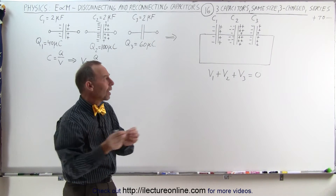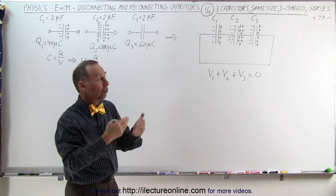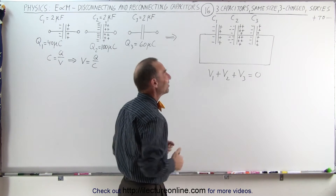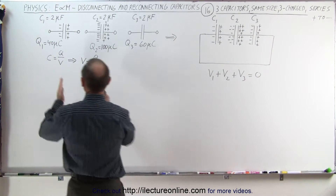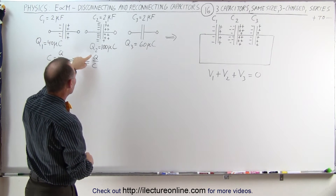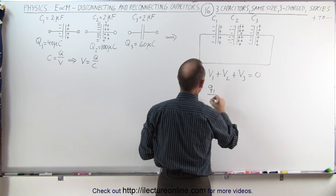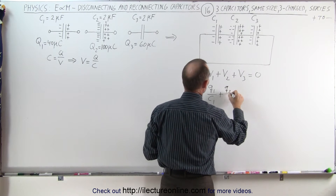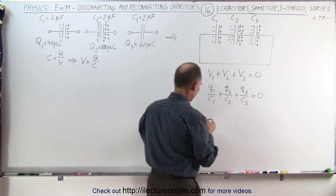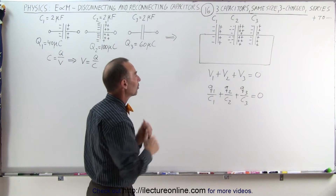They can't all three be negative because then again they can't add up to zero. So the charges are going to be moved around in such a way that at least one of those three capacitors will have its charges reversed when it reaches its final steady-state situation. Next, we use the definition of capacitance — charge divided by voltage, therefore voltage is charge divided by capacitance — which means V1 = Q1/C1 + Q2/C2 + Q3/C3 = 0, where Q1, Q2, and Q3 are the final steady-state charges on each capacitor.